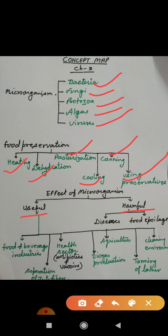Useful microorganisms are found in several fields. Number one is food and beverage industries. Number two is the health sector — this includes making antibiotics, making vaccines, and making injections of insulin. Insulin is a hormone that is also extracted from microorganisms.